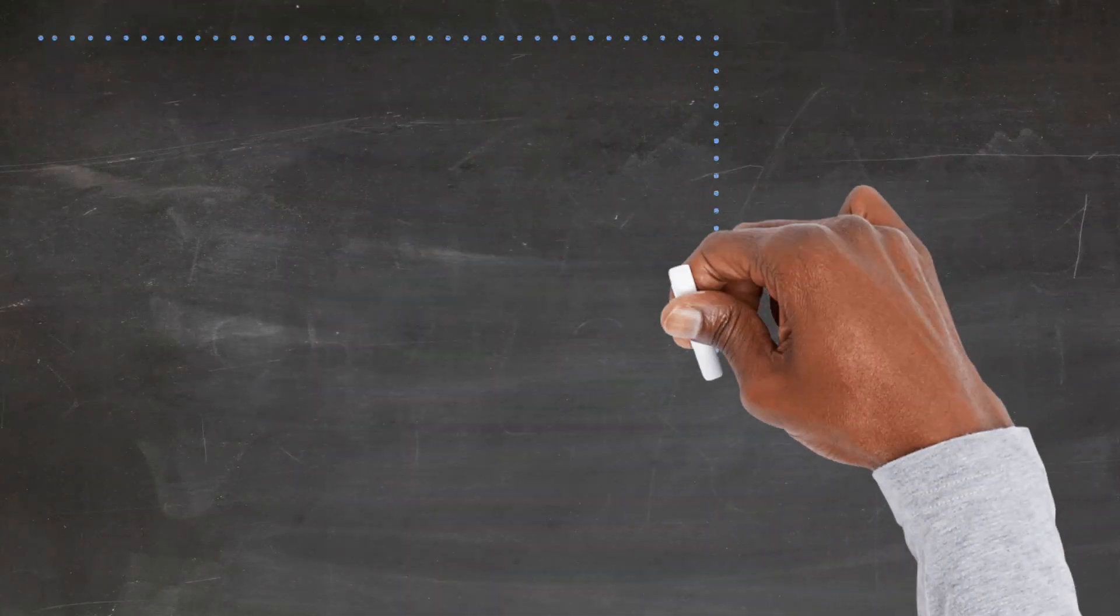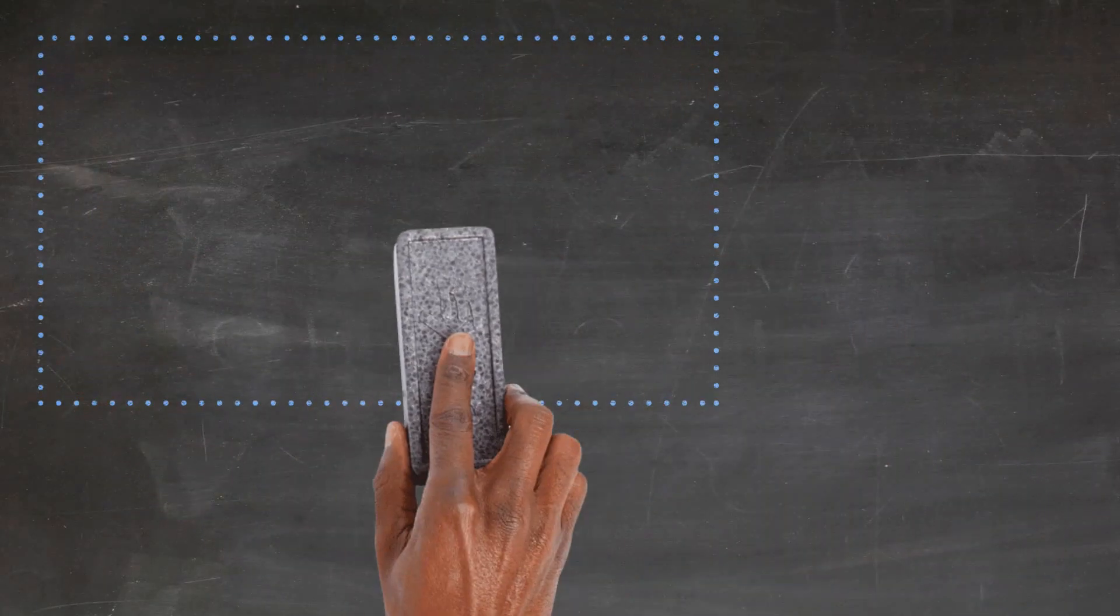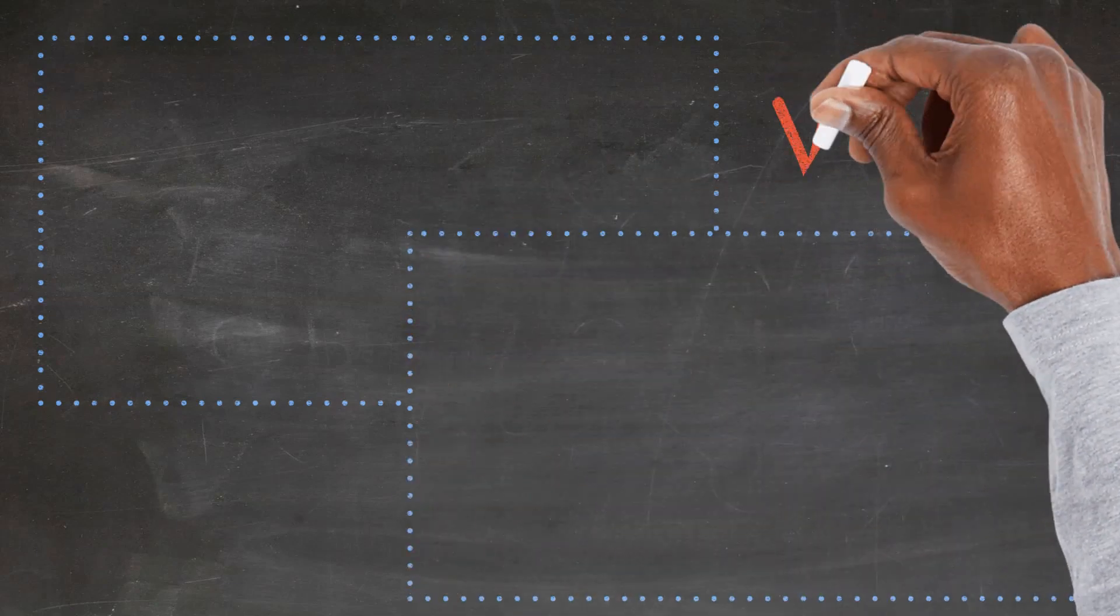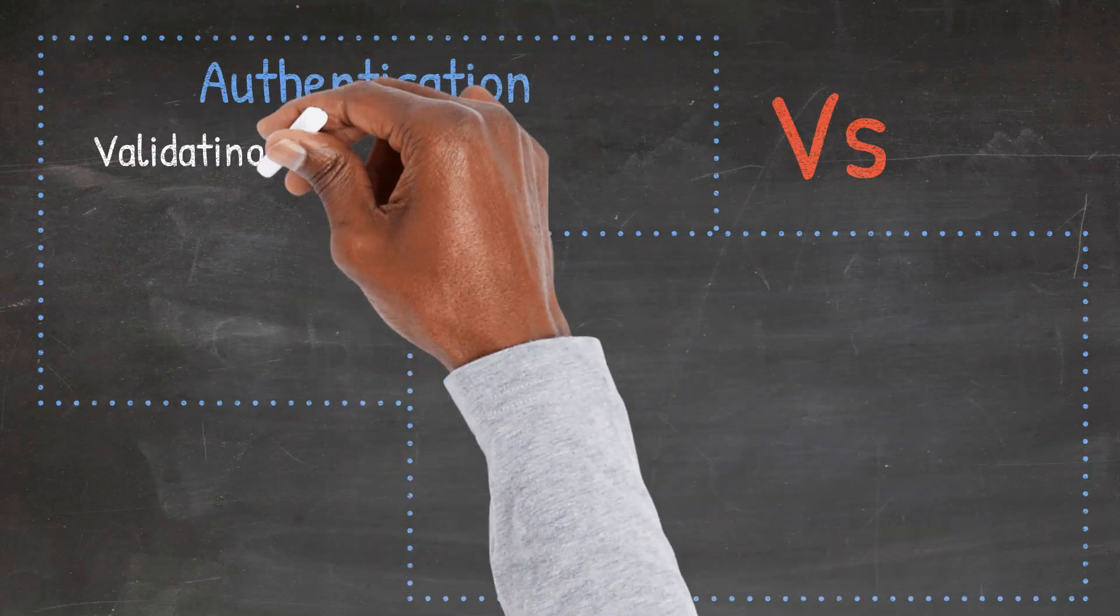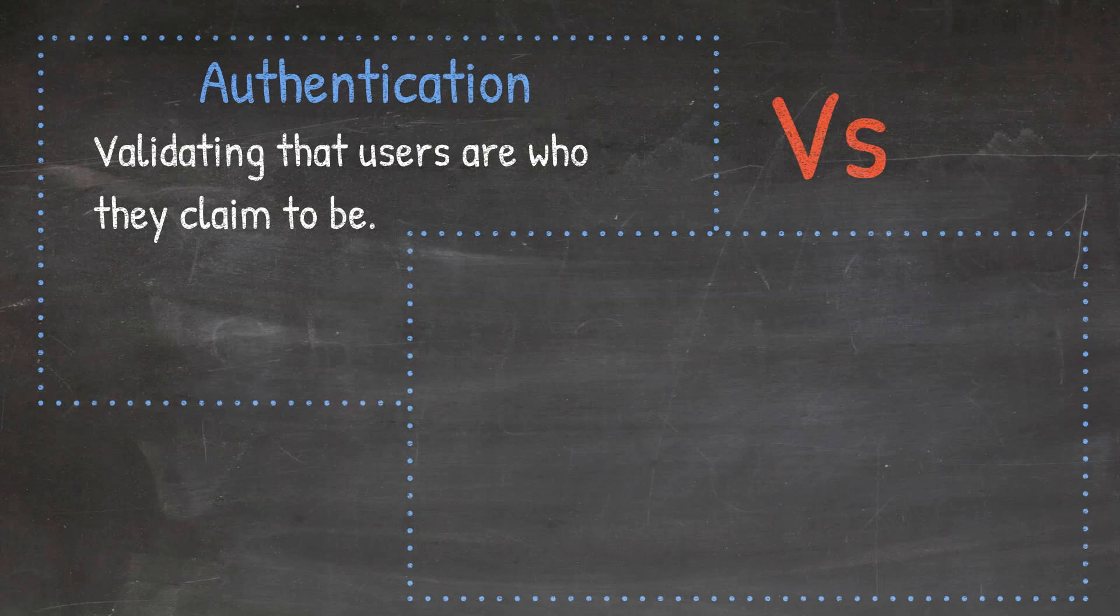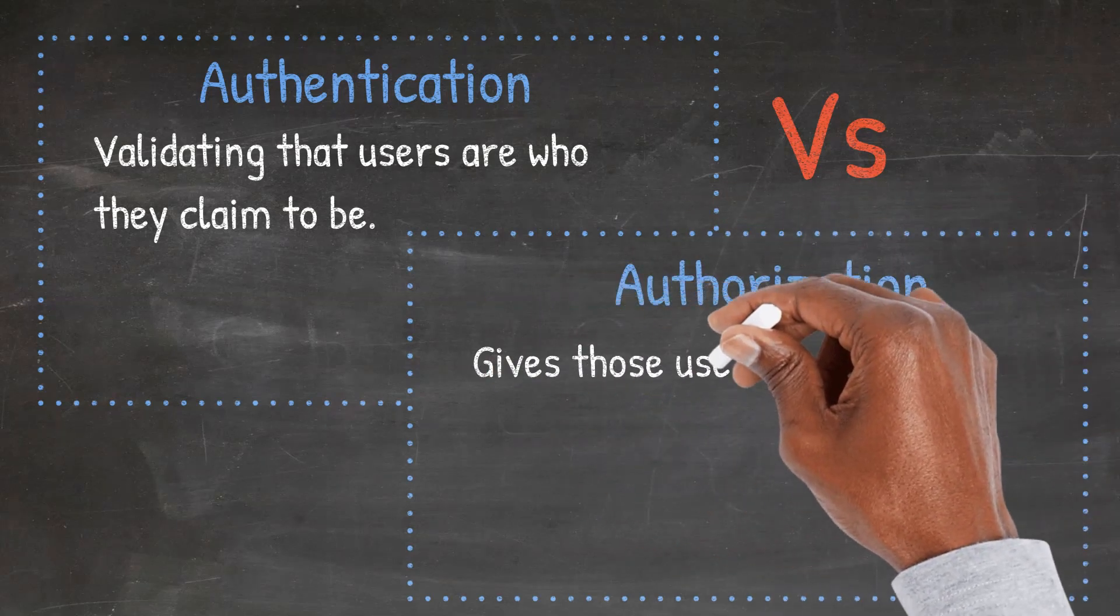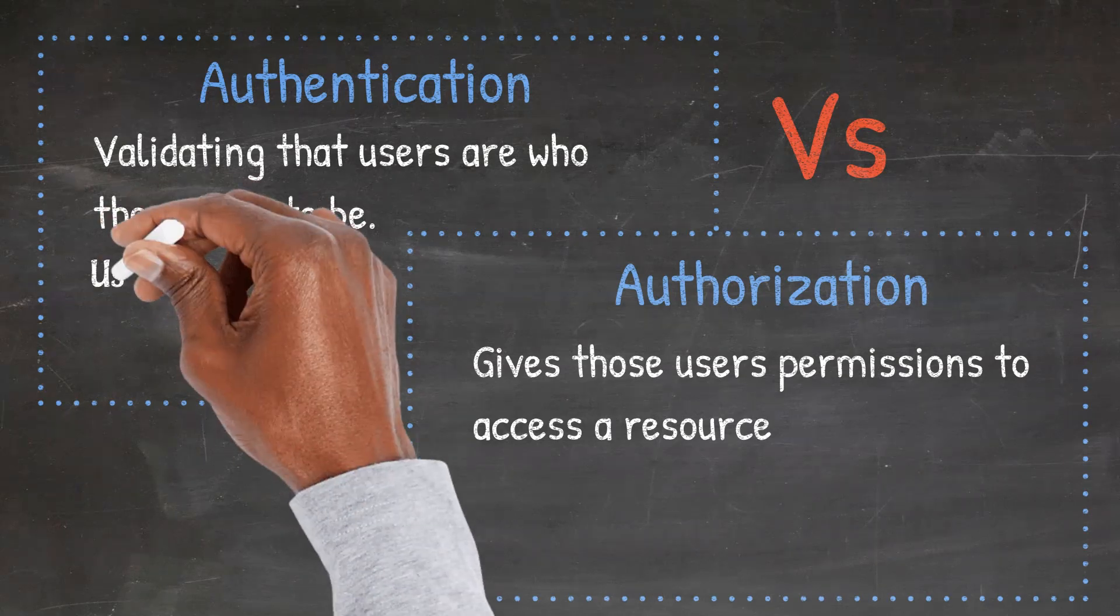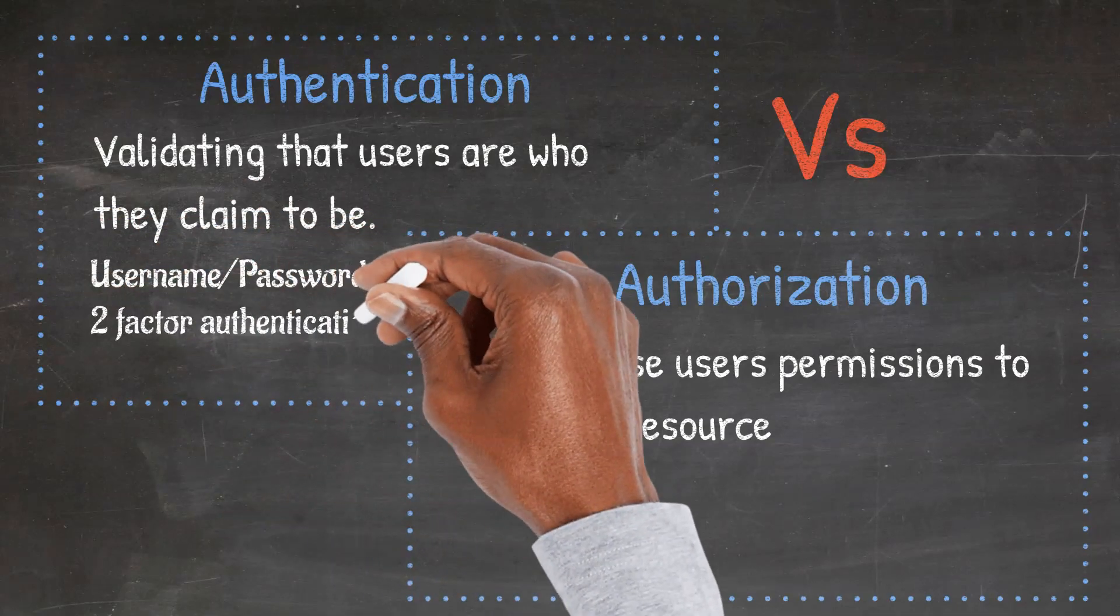Often at times in web development, we hear these two words: authentication and authorization. They might sound similar, but they are very distinct security processes. Authentication is the act of validating that users are who they claim to be, whereas authorization gives users permissions to access a resource on a platform. Auth on the web is commonly achieved by username and passwords, two factor or multifactor authentication, one time pins or passwords, etc.